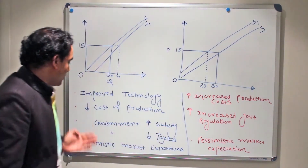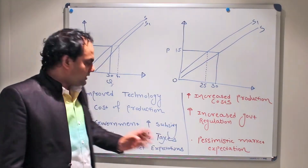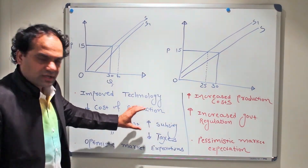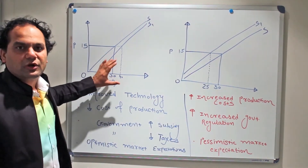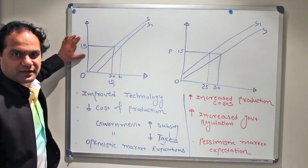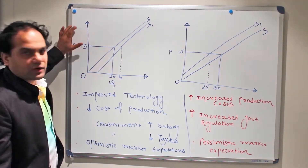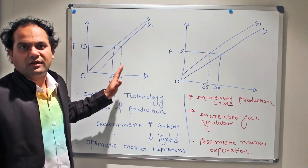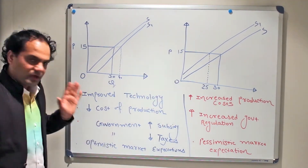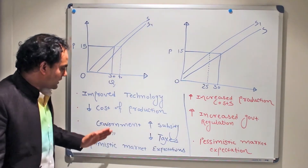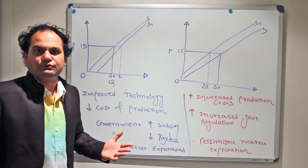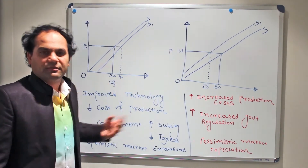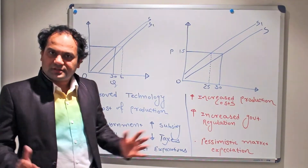Then there is a government role. The government can increase its subsidy to industries, or the government can reduce taxes. Both of these scenarios are favorable for industries. In both circumstances, we will be able to increase our production at the same given price — even though the price has not increased, our production and supply will increase because it is a favorable situation. Government increasing subsidy or decreasing taxes means industries can produce more at a given price.